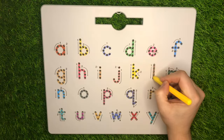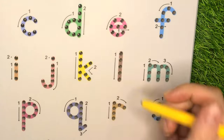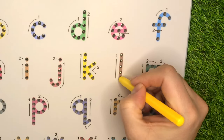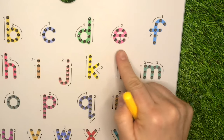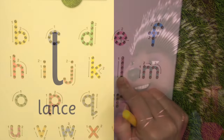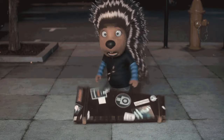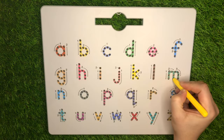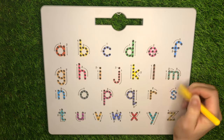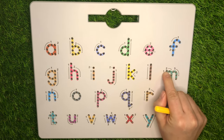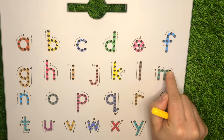L is for Ash's partner, Lance. M is for...